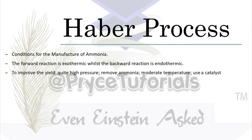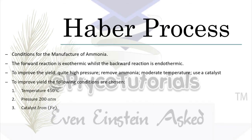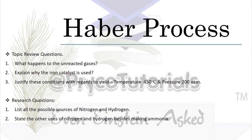To get more yield, we apply quite high pressure. We make sure that as we produce ammonia, we remove it so that the reaction shifts to make more ammonia. We apply moderate temperatures and use a catalyst so that the reaction goes faster.